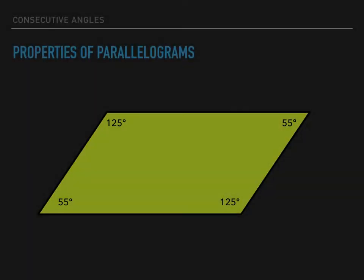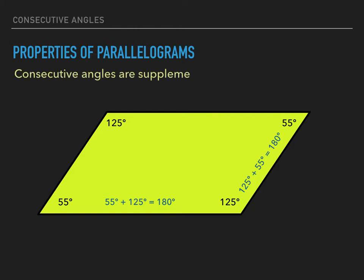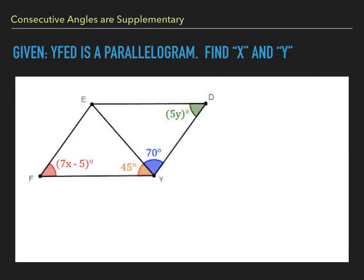Another property of parallelograms also has to do with angles. Notice that the two angles along the base, 55 degrees plus 125 degrees, add together to equal 180. That makes sense based on what we know about parallel lines. So what we find out is that consecutive angles in a parallelogram are supplementary.